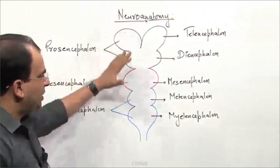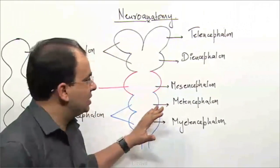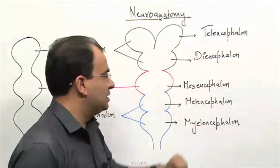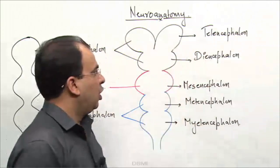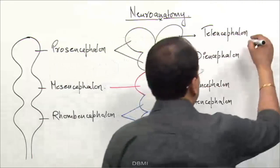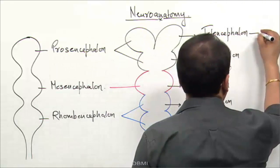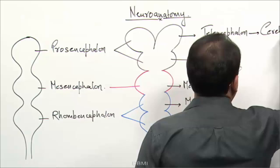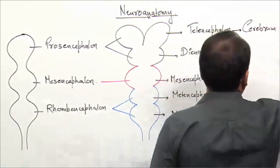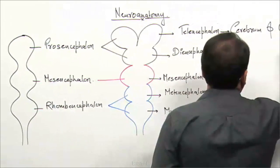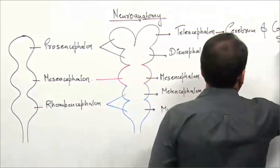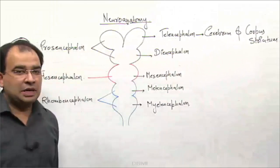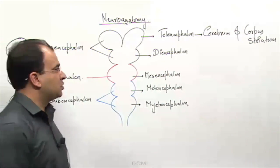After these secondary brain vesicles are formed, you get questions on all these derivatives. The telencephalon portion will give rise to the cerebrum and corpus striatum.